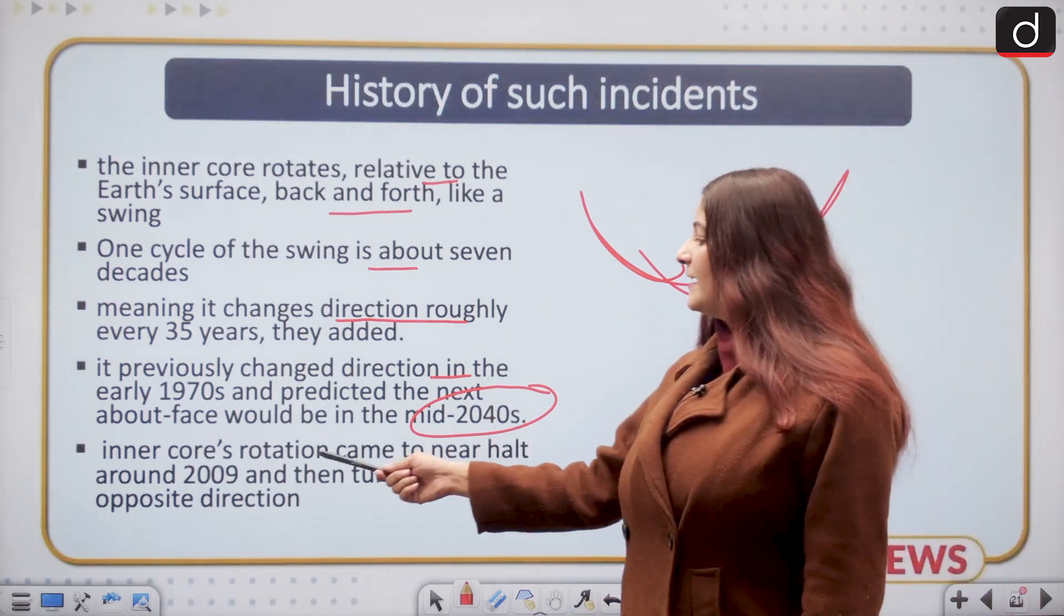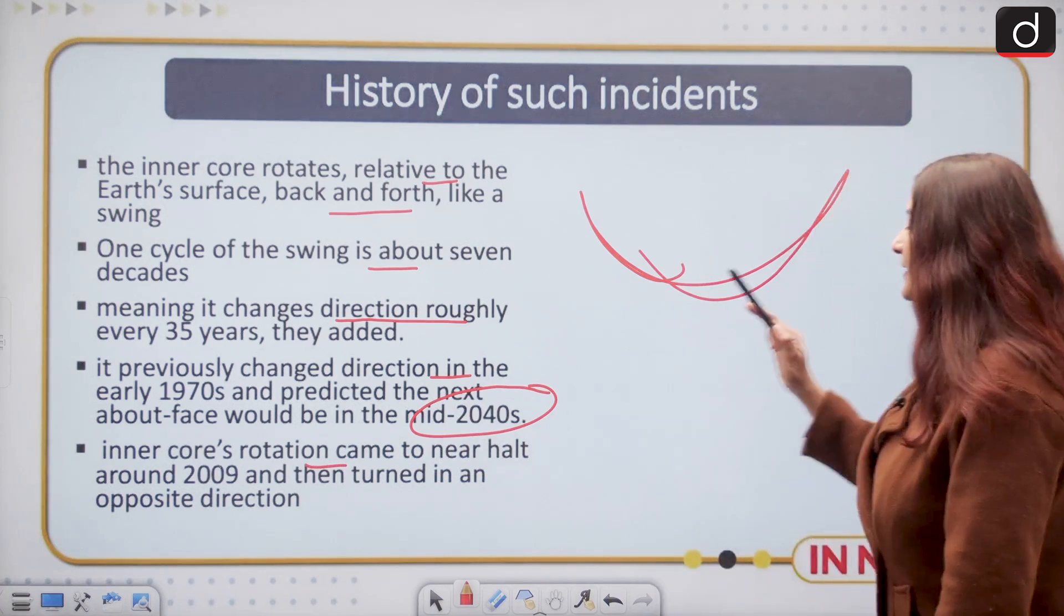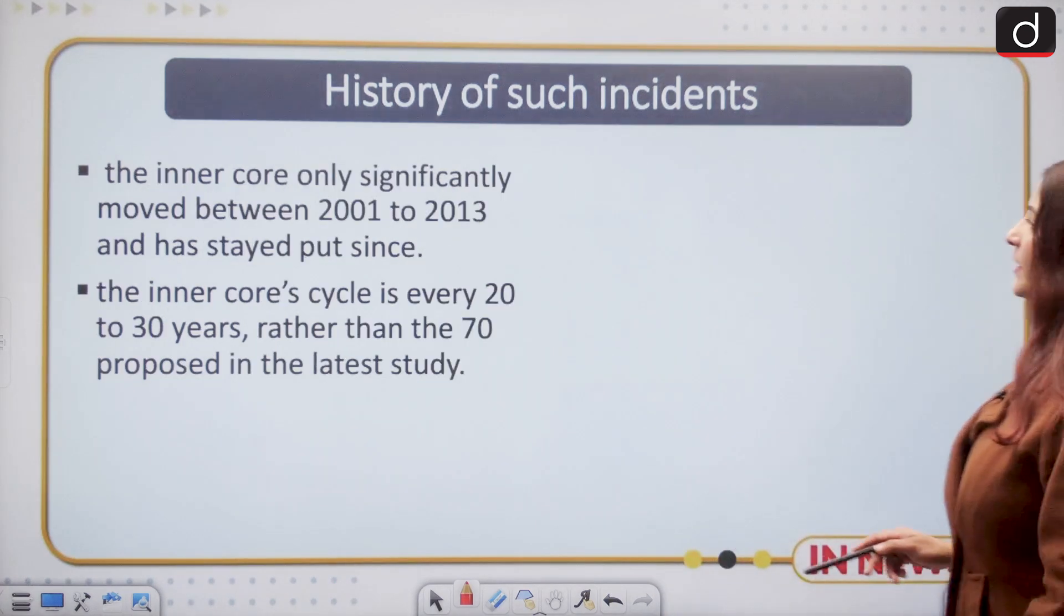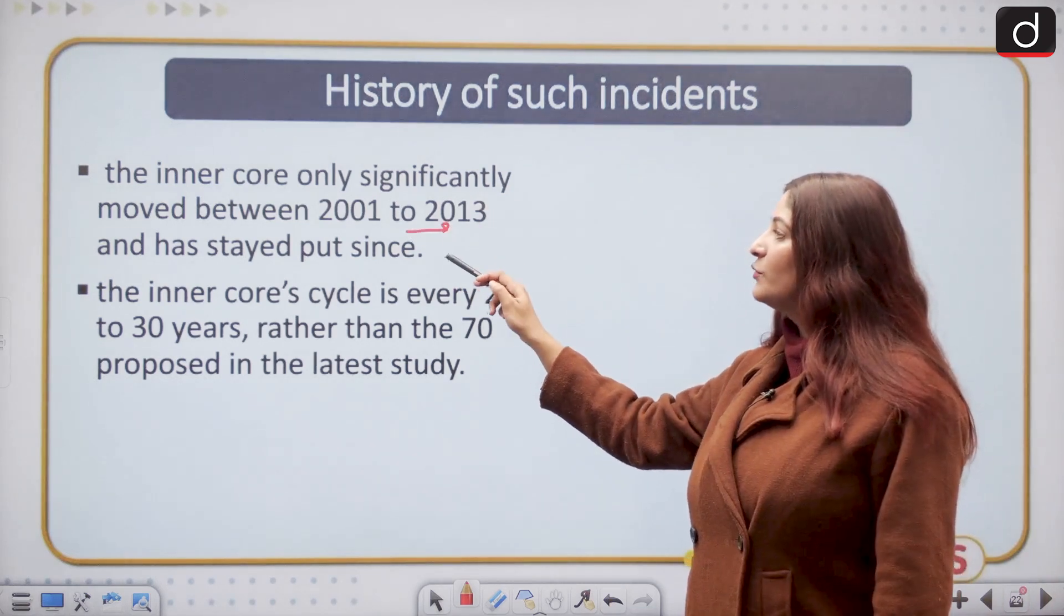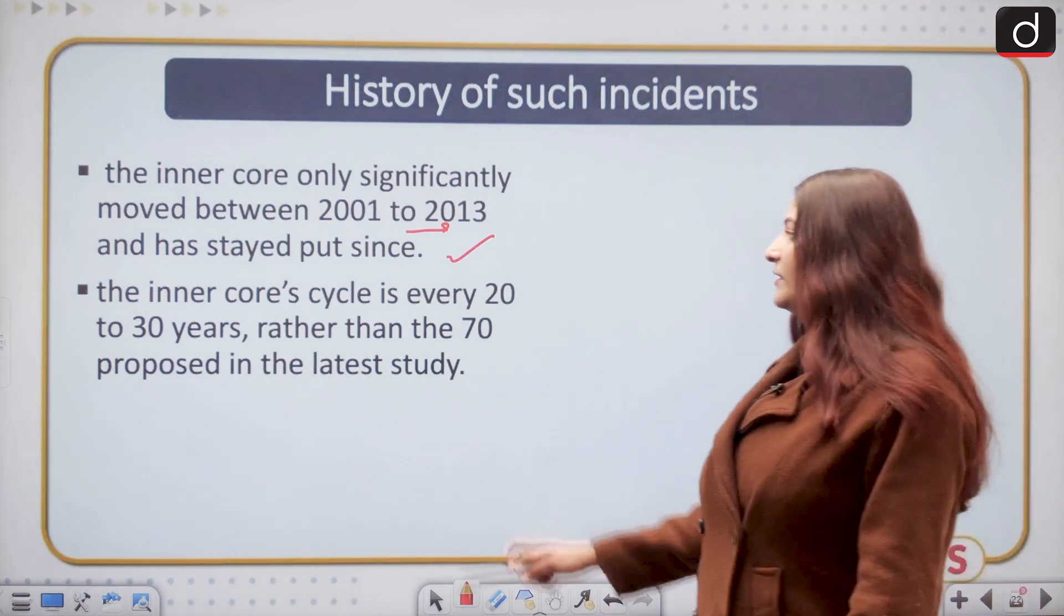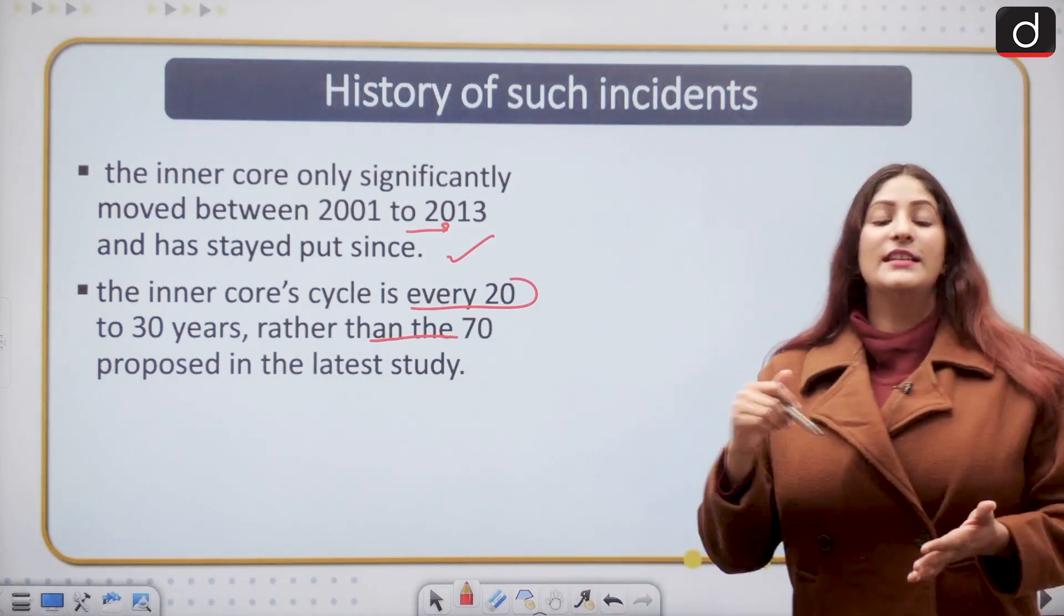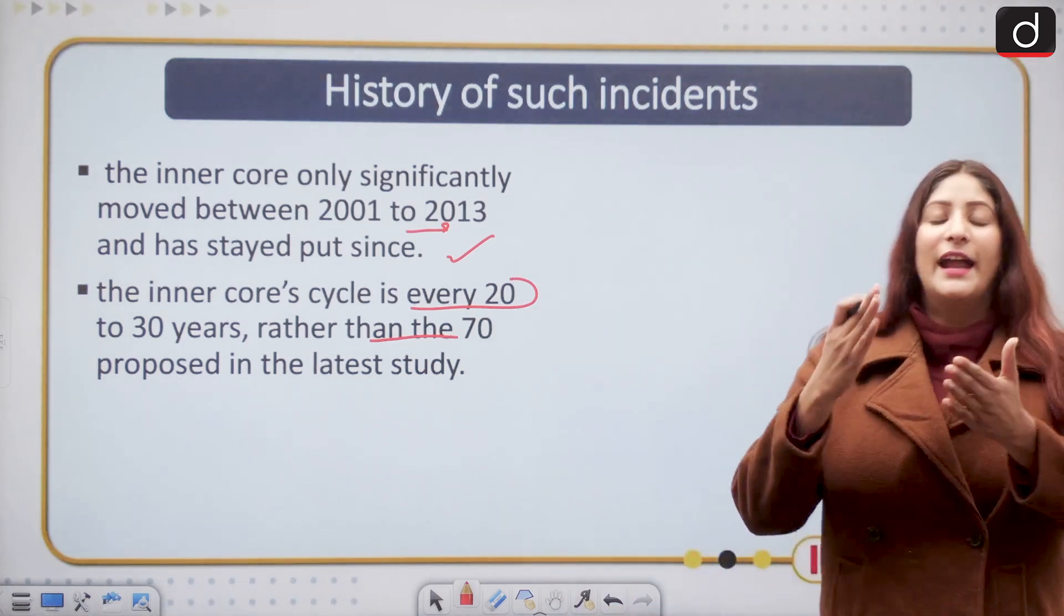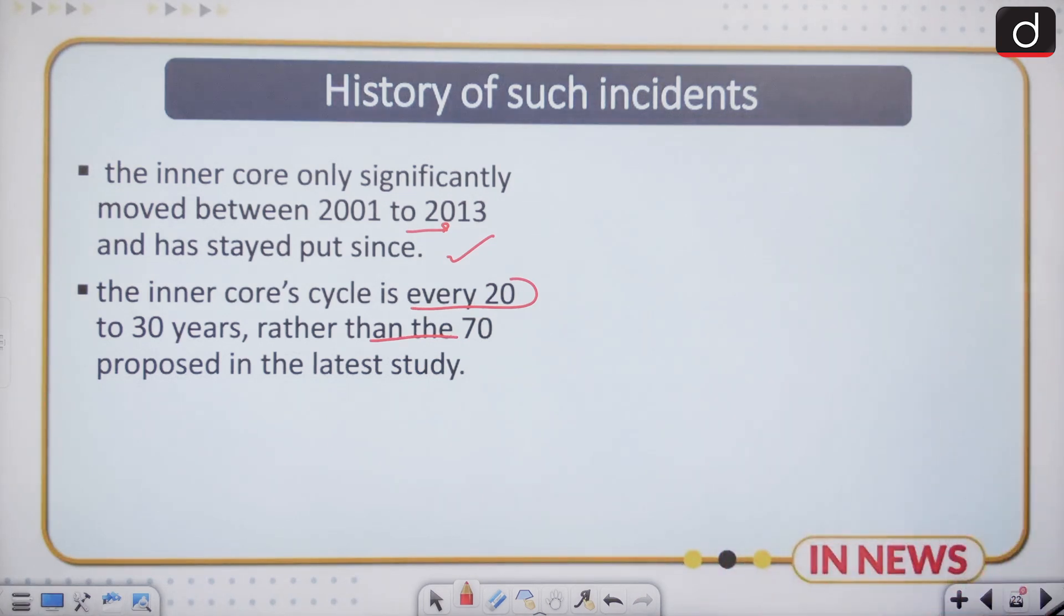But the inner core's rotation came to near halt in 2009 and then started going in a different direction. The inner core only significantly moved between 2001 to 2013 and has stayed put since. The inner core's cycle is every 20 to 30 years rather than 70 years, as proposed in the latest study, and this has created division between seismologists and geophysicists.